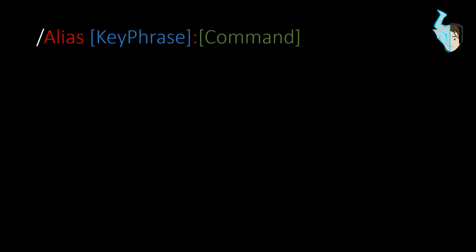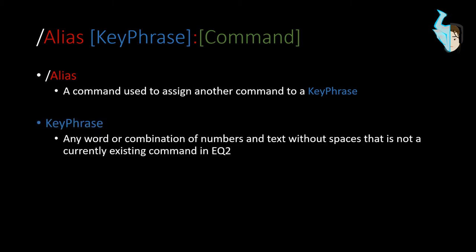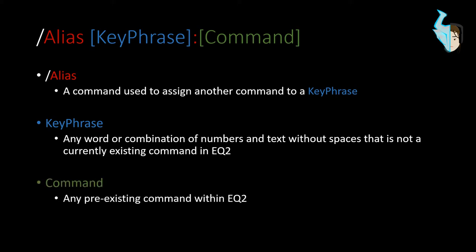I actually heard about this command from another YouTuber who was doing a panel, and I will link his video down below — go ahead and take a look. I'm trying to simplify it a little better here. The alias command is used to assign another command to a key phrase. The key phrase is any word or combination of numbers and text without spaces that is not a currently existing command. This key phrase is defined by you, so you can make it something like 'fluffy waffles' or whatever you desire. The command attached — shown in green — is any pre-existing command within EQ2.